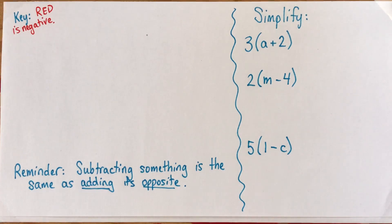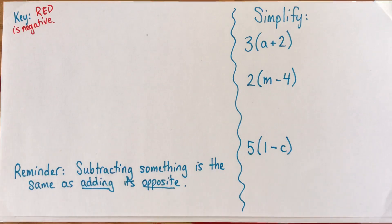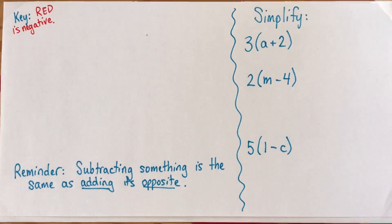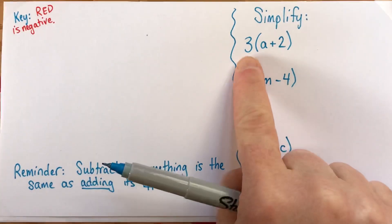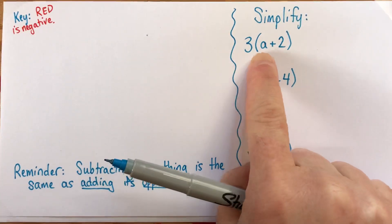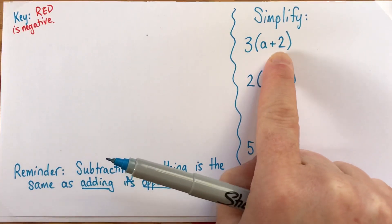In this video, we're going to simplify a few expressions using the distributive property. We've got some expressions to simplify here. The first one is 3 times a plus 2.